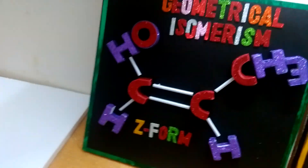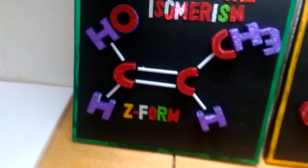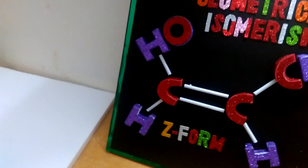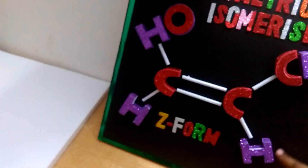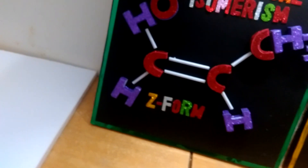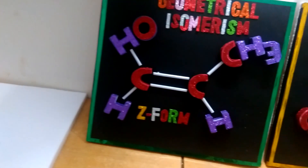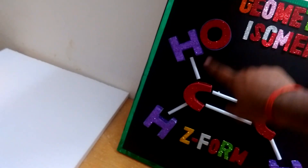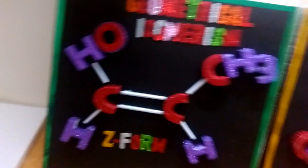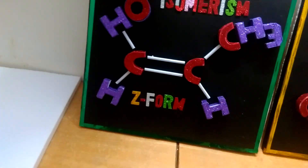Let us discuss about the cis form with examples. In this model I have taken C double bond C with groups OH, H, CH3, and H. So we have to find whether this is cis or trans.